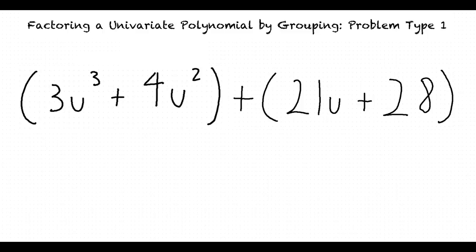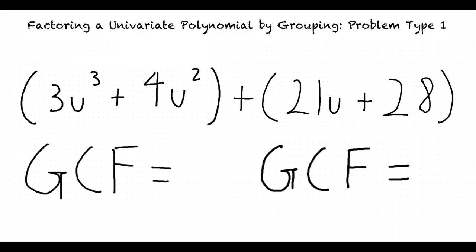Factor each binomial by finding the greatest common factor of each binomial. For our first binomial 3u to the third plus 4u squared, the GCF is u squared, and for our second binomial 21u plus 28, the GCF is 7.